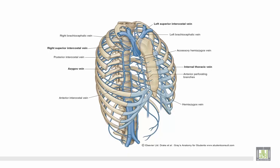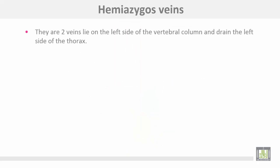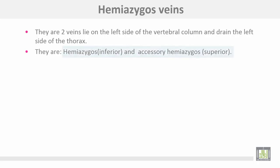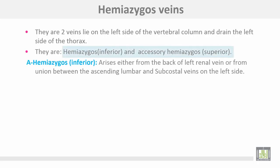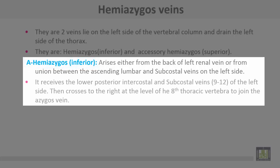This figure shows the tributaries of the azygous vein. This is the accessory hemi-azygous or superior hemi-azygous, then the hemi-azygous or inferior hemi-azygous, and the posterior intercostal veins on the right side. The hemi-azygous veins are two veins lying on the left side of the vertebral column that drain the left side of the thorax. They are the hemi-azygous (inferior) and the accessory hemi-azygous (superior).